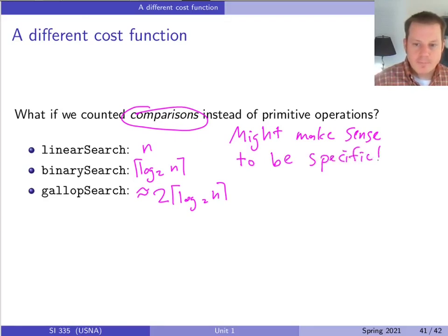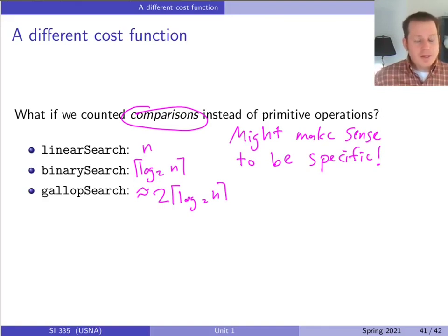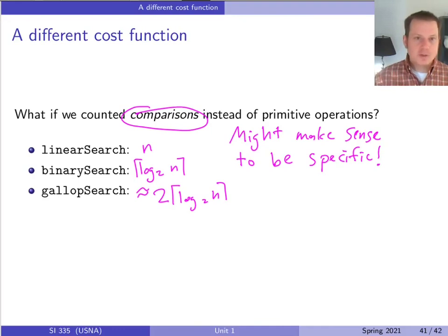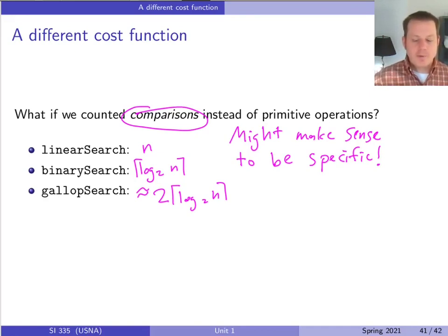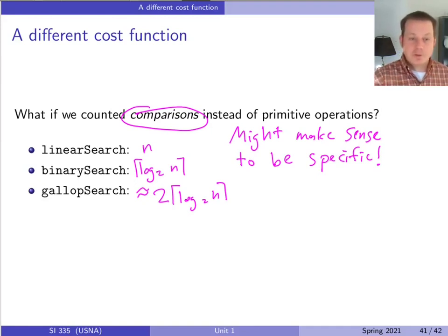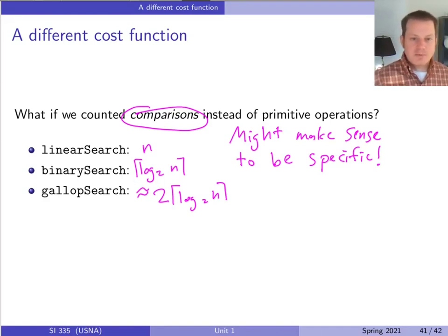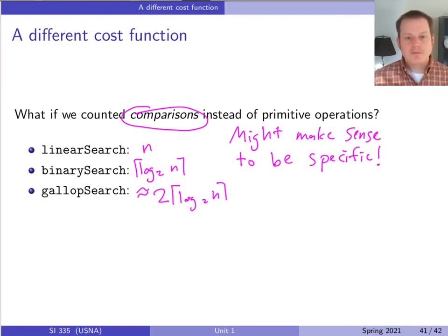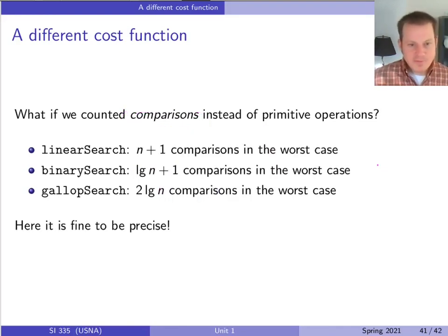Do we always need to forget about constants? No. Usually when we care about those constants is when we're not counting the vaguely-defined primitive operations, which are inconsistent between programming languages, operating systems, or architectures. But when we're counting something specific like the number of comparisons, that's something real with consistent meaning across systems. Similarly for memory usage or network transfer in network algorithms — those different cost functions can sometimes give a more precise analysis.